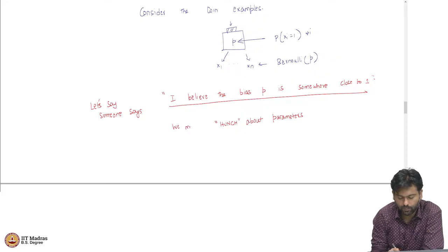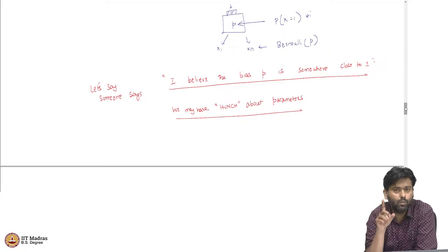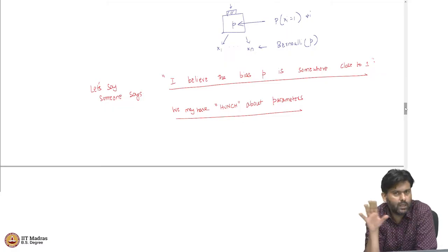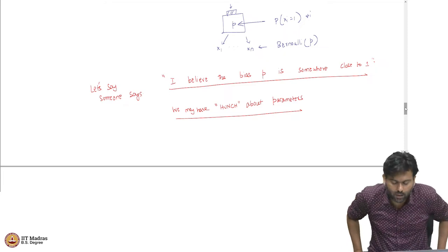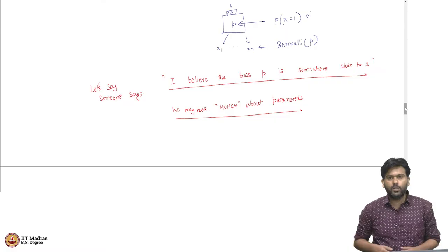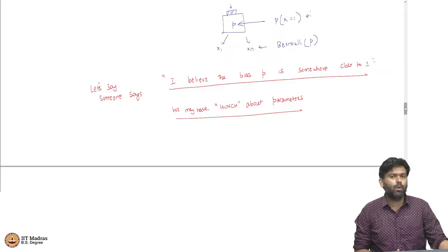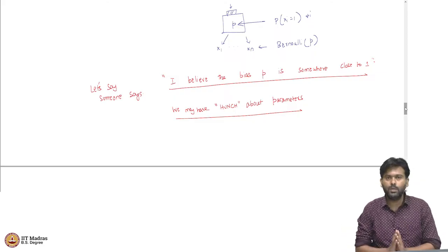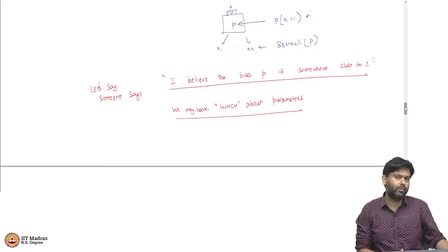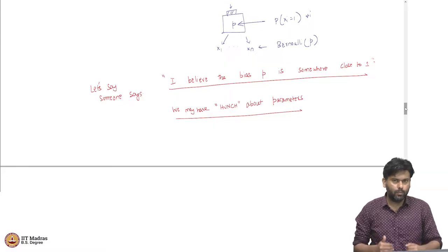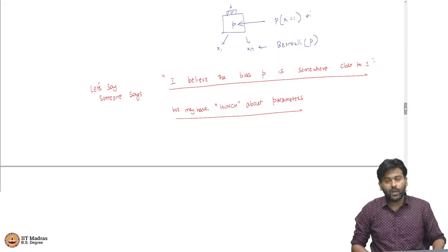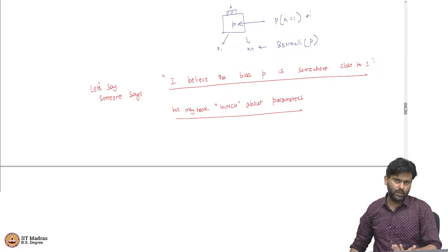We may have a hunch about the parameters. Remember, these hunches have nothing to do with the data — we have not even seen a single data point yet. In the case of maximum likelihood estimators, if you had no data and I asked you what would be your guess for the underlying model, you would go blank, because your method depends only on data. Maximum likelihood estimator depends completely on data. But in practice, you might have something more than the data, which is the hunch I am talking about.